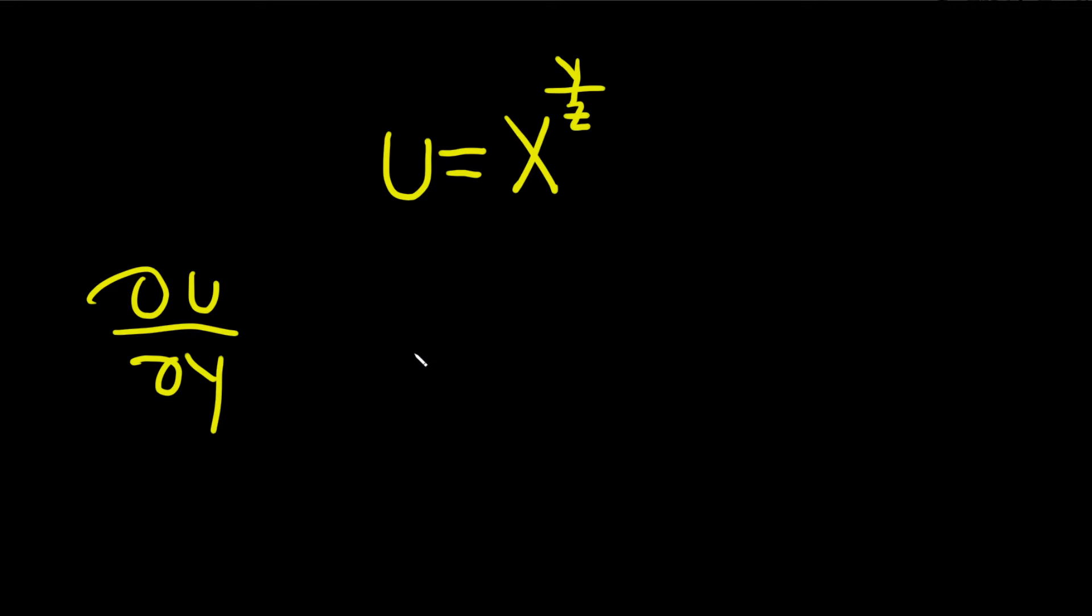In this problem, we have to find the partial derivative of u with respect to y. So let's think about that very carefully. When we're taking this partial with respect to y, everything else is constant.